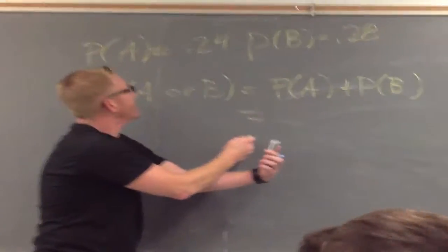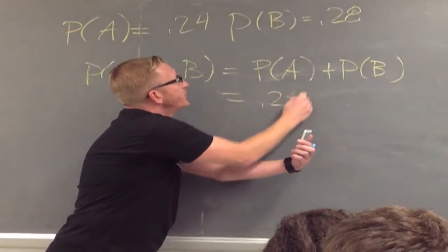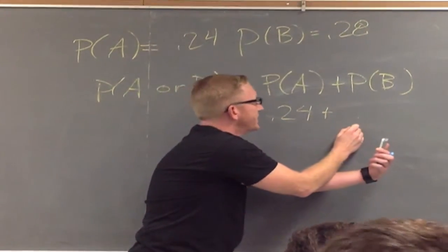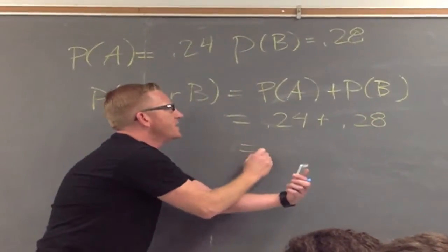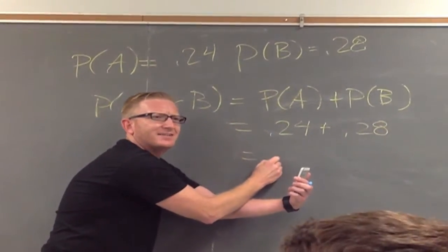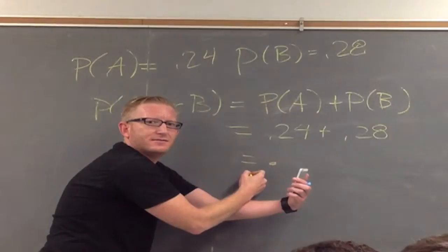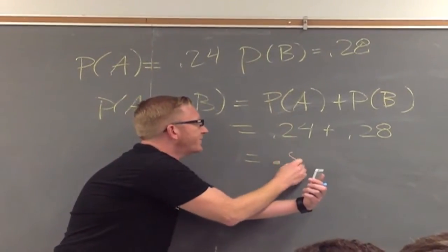So then, that's going to be the probability of A, which was 0.24, plus the probability of B, which was 0.28. Adam, what is that? 52. 0.52.